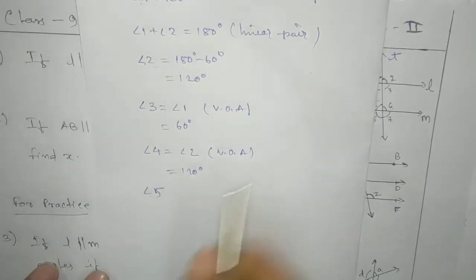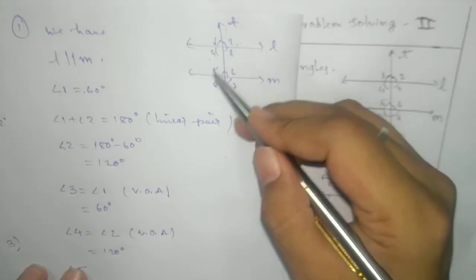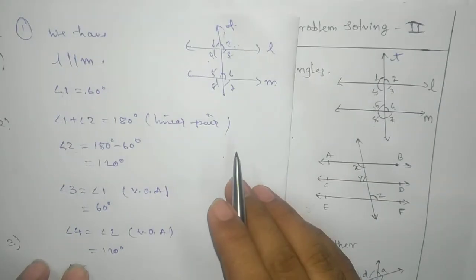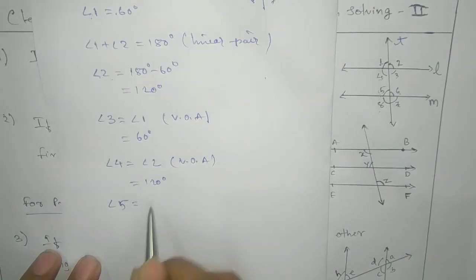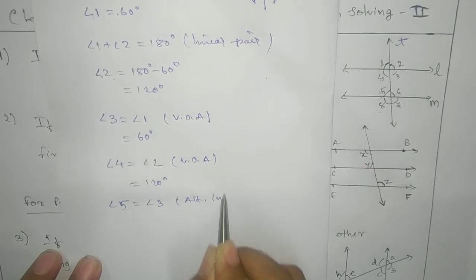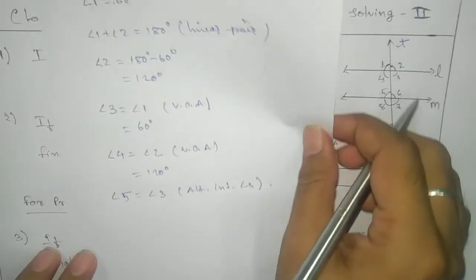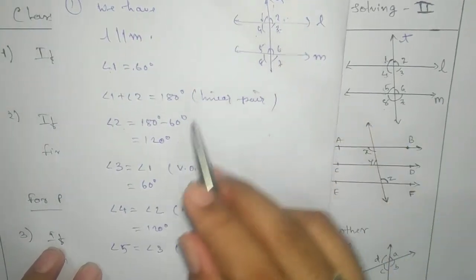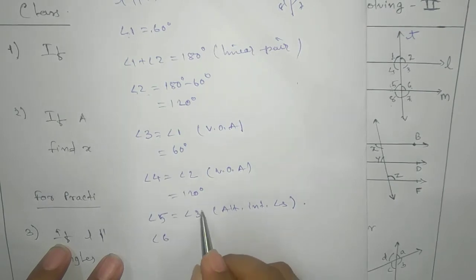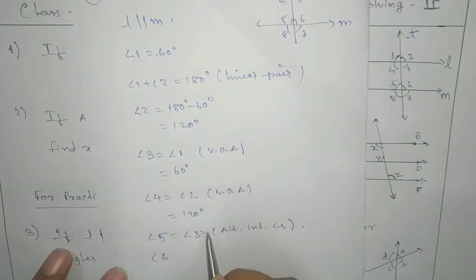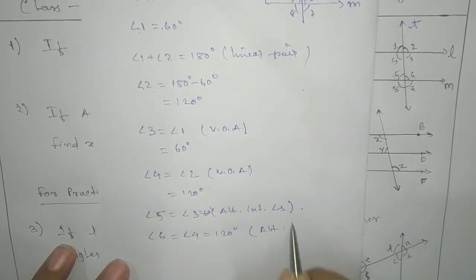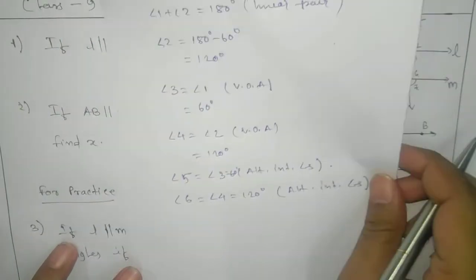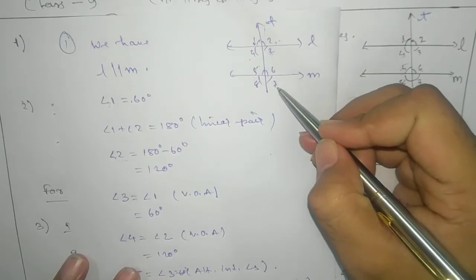Next, angle 5 equals angle 3 — reason: alternate interior angles — so angle 5 = 60°. Then angle 6 equals angle 4 — reason: alternate interior angles — so angle 6 = 120°.